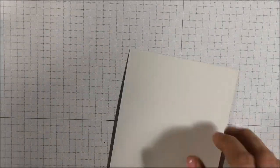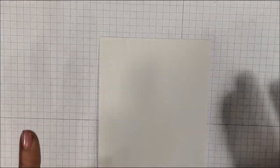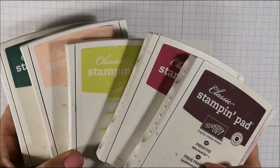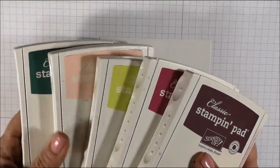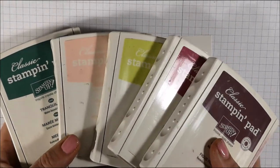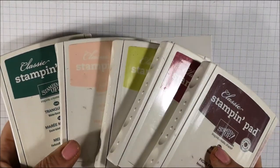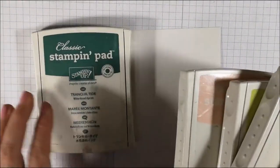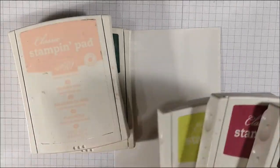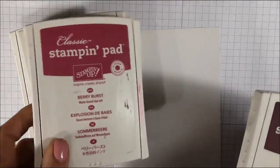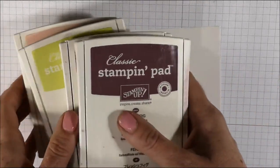So the first thing you want to do is sponge on color. These are our in colors that are also retiring and I just want to get a little bit more use out of them before they are gone for good. So it is our tranquil tide, our powder pink, lemon lime twist, berry burst, and fresh fig.